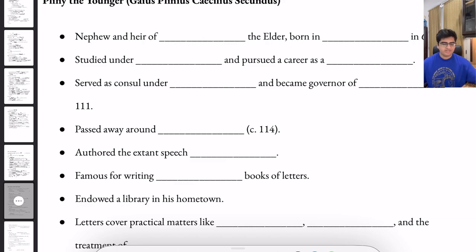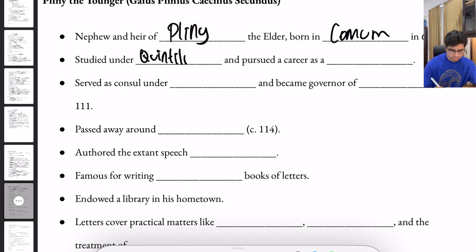So let's begin with Pliny the Younger. Pliny the Younger was a nephew and heir of Pliny the Elder, born in Comum in 62 A.D. He studied under Quintilian and pursued a career as a lawyer.